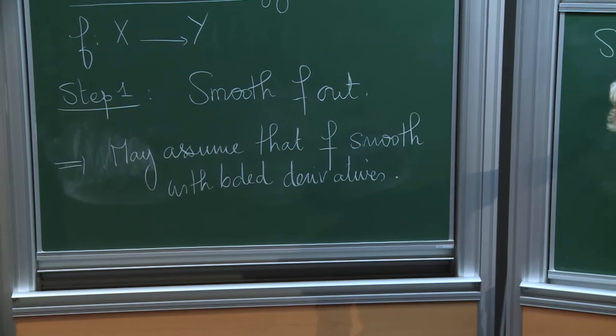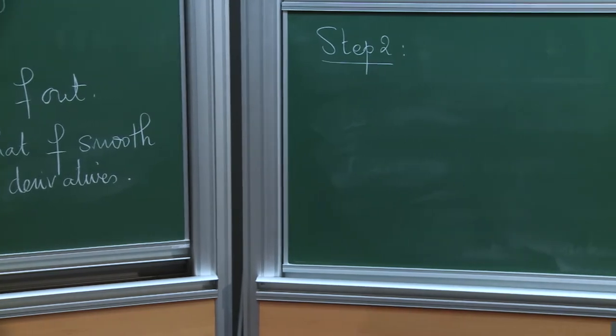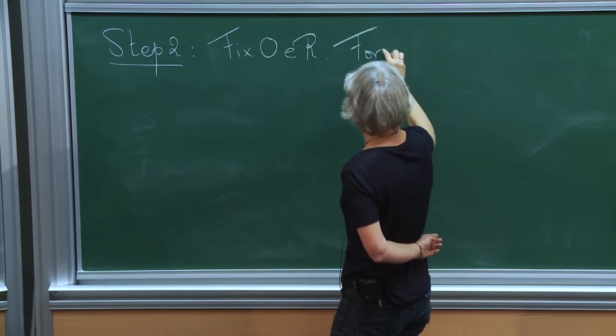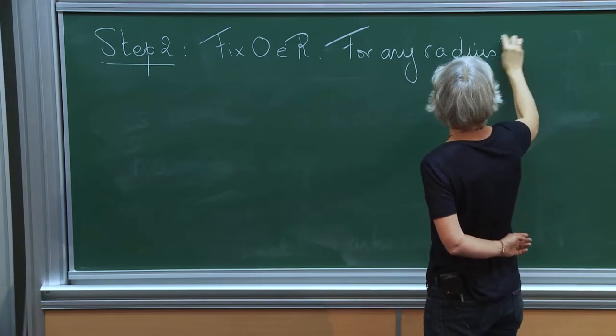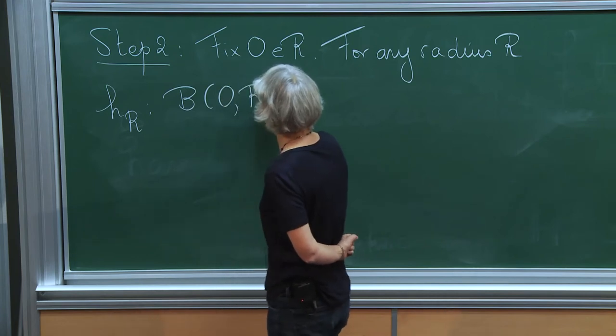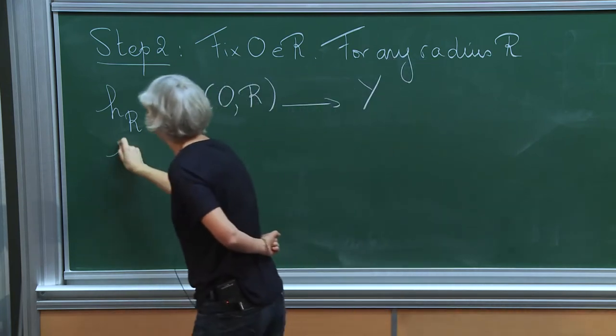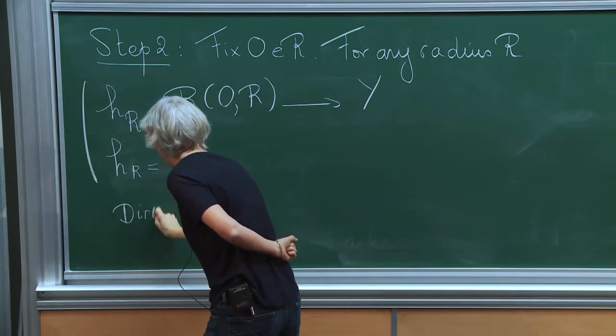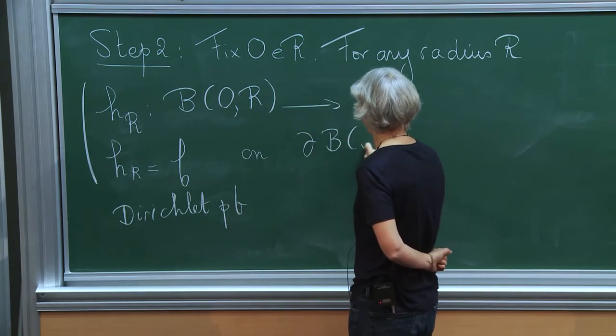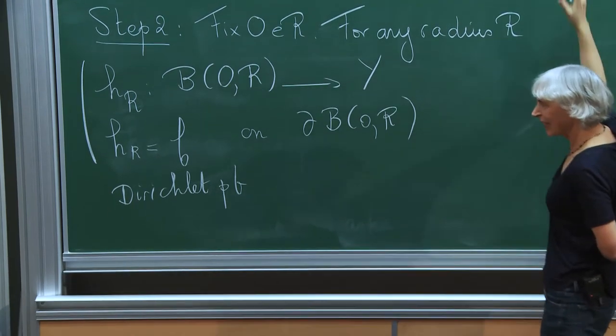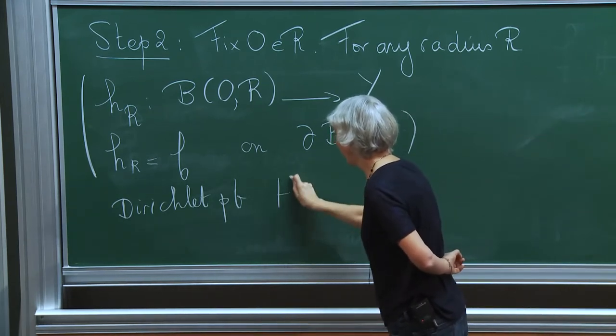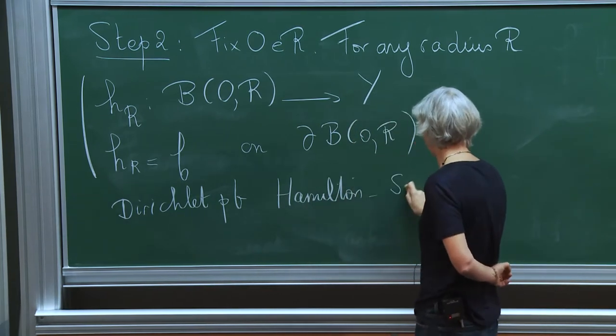So Step 2: Fix a point O and a region in X, and for any radius R you consider the harmonic map H_R which is defined on this big ball with center O and radius R to Y, and which is a solution of the Dirichlet problem with value F on the boundary. So the existence, uniqueness, and regularity of the solution of this Dirichlet problem are granted due to results by Hamilton, Schoen, and Yau.